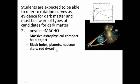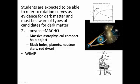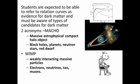So we have MACHO. And the opposite of MACHO is WIMP. Now this is a WIMP. Oops. No, this is a WIMPy kid, sorry. A WIMP is a weakly interacting massive particle. For example, electrons, neutrinos, tau particles and muons and so on.